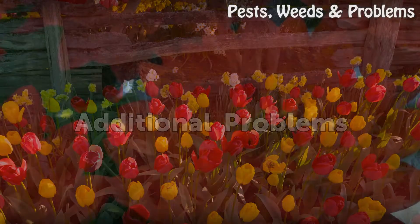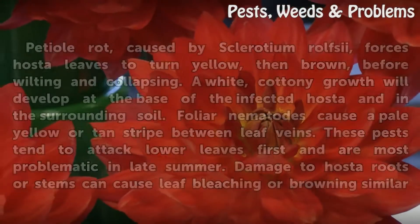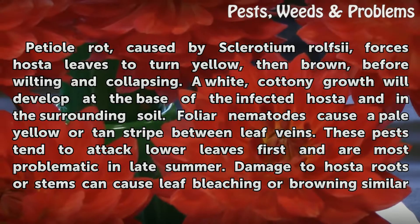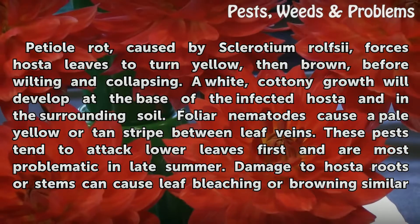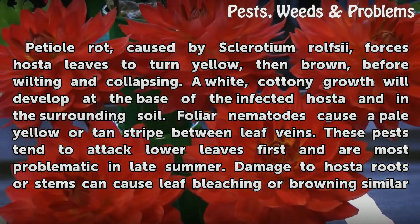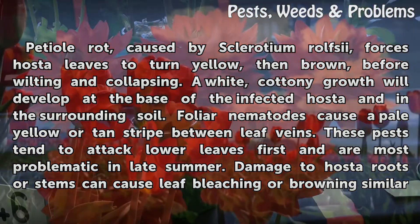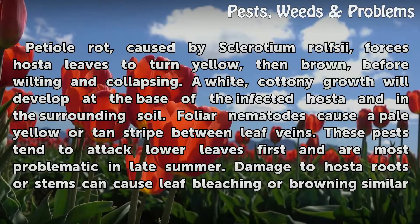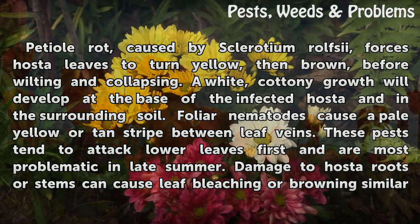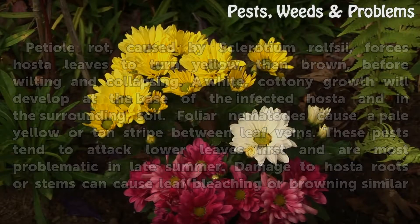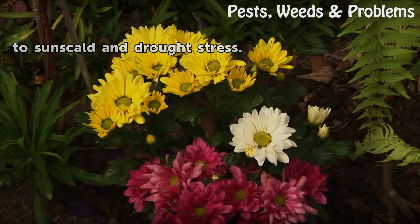Additional problems. Petiole rot, caused by Sclerotium rolfsii, forces hosta leaves to turn yellow then brown before wilting and collapsing. A white cottony growth will develop at the base of the infected hosta and in the surrounding soil. Foliar nematodes cause a pale yellow or tan stripe between leaf veins; these pests tend to attack lower leaves first and are most problematic in late summer. Damage to hosta roots or stems can also cause leaf bleaching or browning similar to sun scald and drought stress.